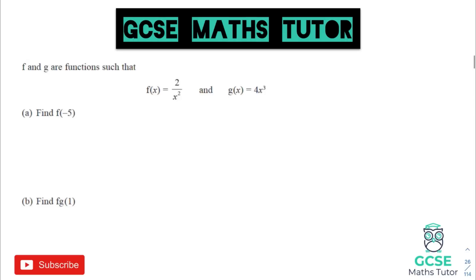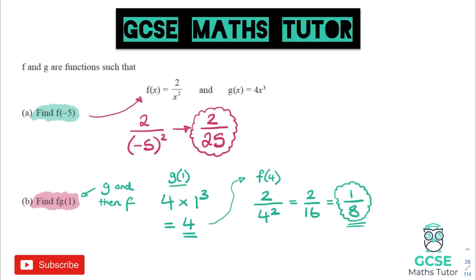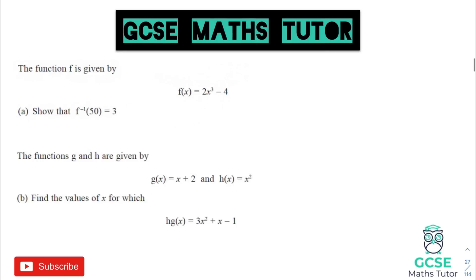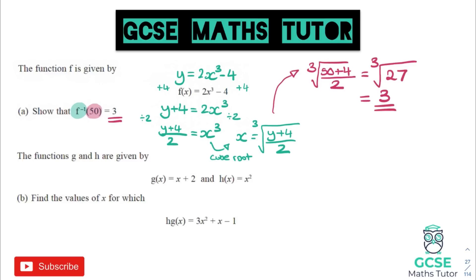When there's a number in the function bracket, just substitute it into the function — for example, negative 5 into the f function. For a composite function, sub into g first, then take that answer into f, reading from right to left. For an inverse function, swap f(x) for y, make x the subject, and then substitute a number in if asked — this one asked us to show the result was 3.